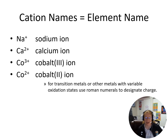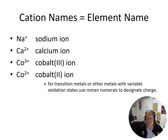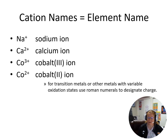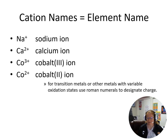When I look at cation names, it's just the element name — so a sodium ion is just sodium ion, a calcium ion is calcium ion. A lot of our elements have fixed charges. Our metals in group 1A have one valence electron and always form a plus one. Our metals in group 2A have two valence electrons and always form a plus two. When I get over to 3A, I have three valence electrons and form a plus three.